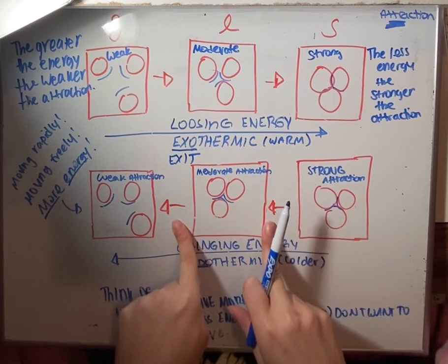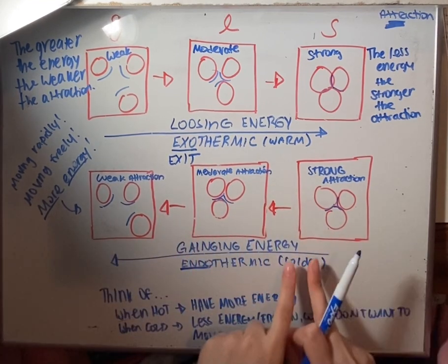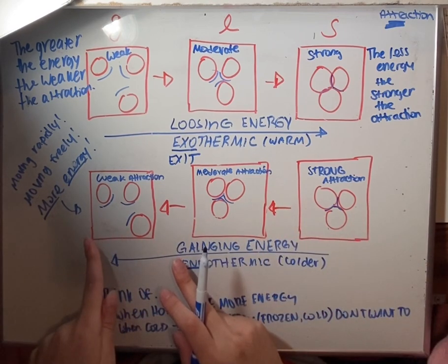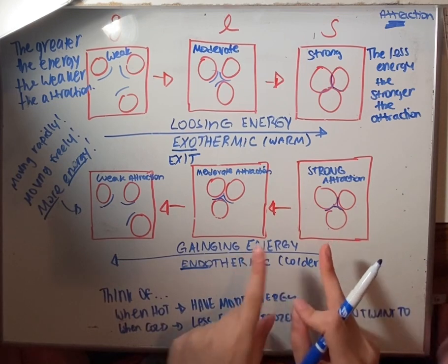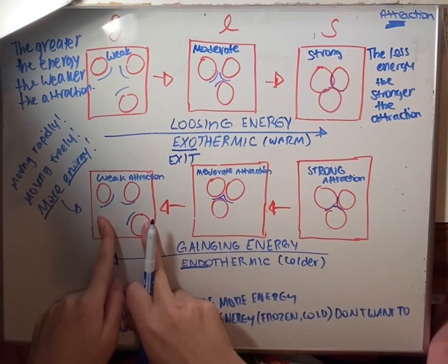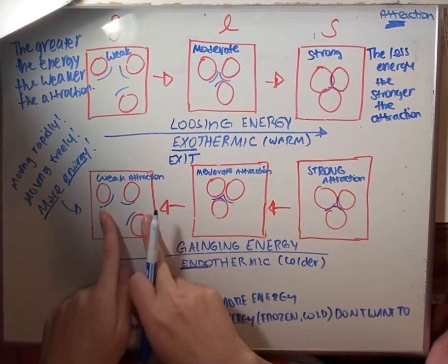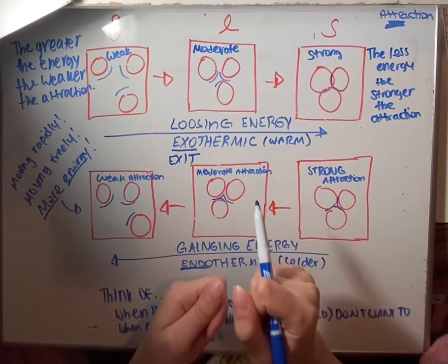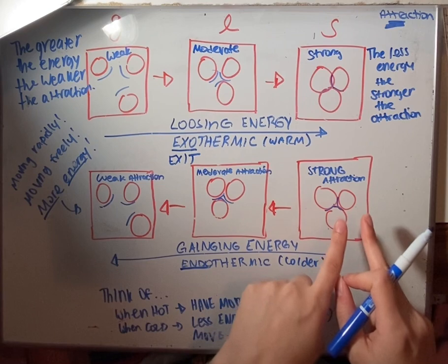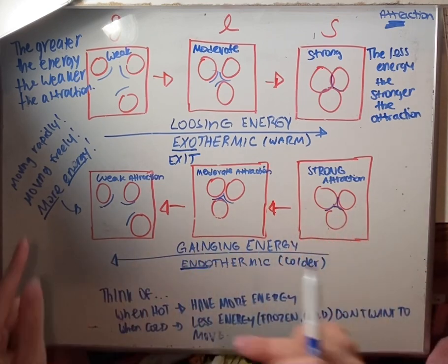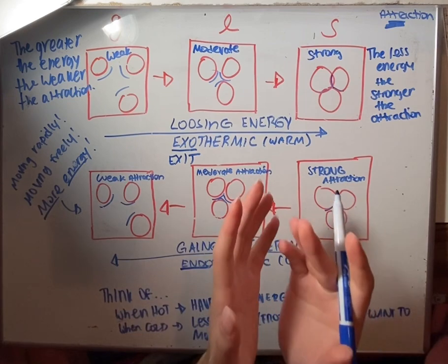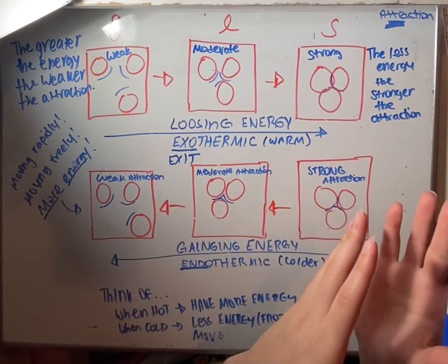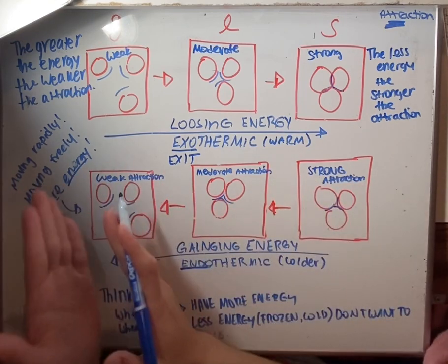Now when you're going the opposite way — from a solid to a liquid to a gas — you're gaining energy. Because the more energy you get, the weaker the attraction. A solid has a strong attraction and a gas has a weak attraction, so going from solid to gas means you're gaining energy. You don't have energy in a solid, but in a gas you do, so you gained energy to transform from a solid to a gas.